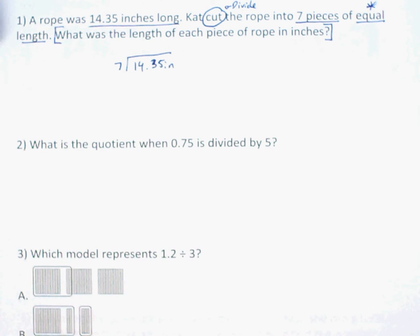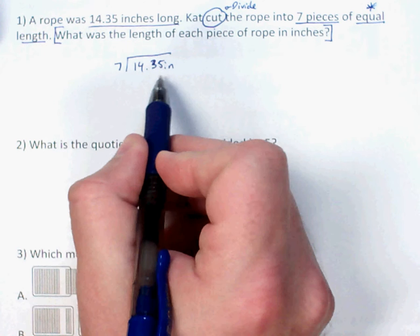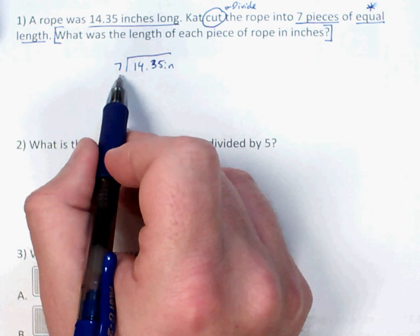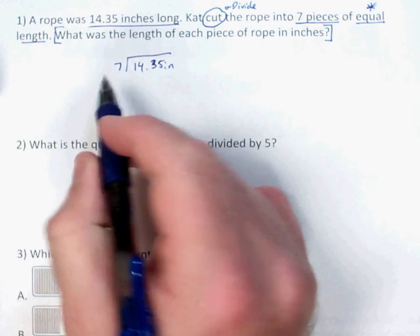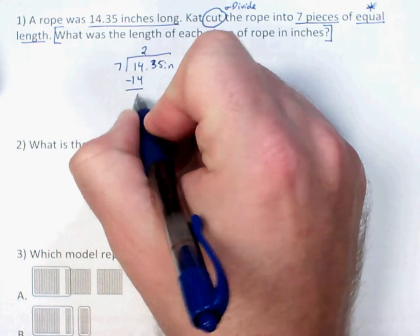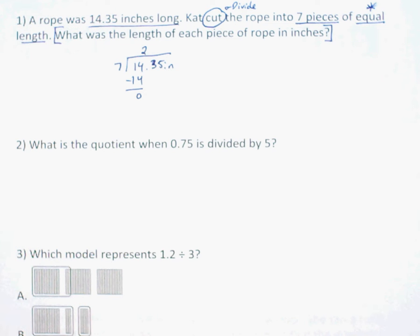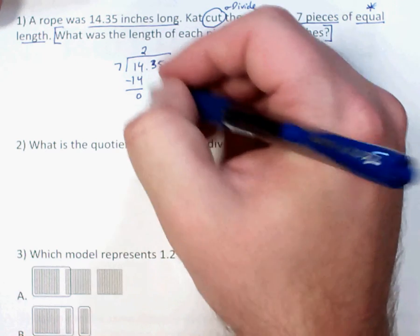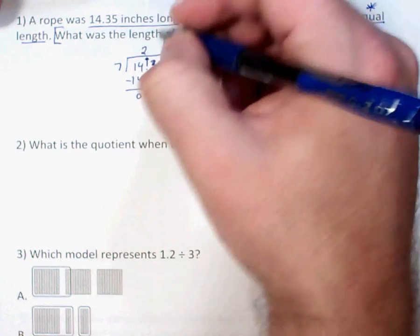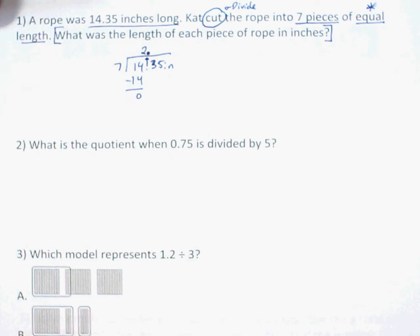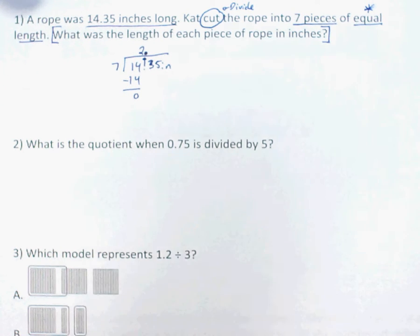When I set this problem up: I've got my starting value — 14.35 — and then how many pieces I'm going to cut it into, which is seven. A lot of times what I'll do before I even start is move the decimal straight up, then just forget about the decimal and complete the computation just like a normal division problem.